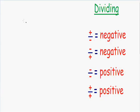Let's get started with an easy example with two positive numbers, which you probably already know how to do. Let's say we have ten divided by five. Five goes into ten two times, so ten divided by five is equal to two.